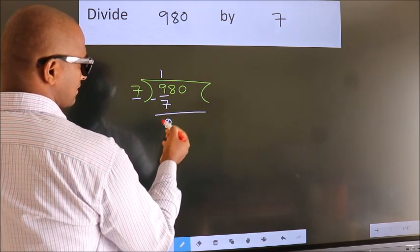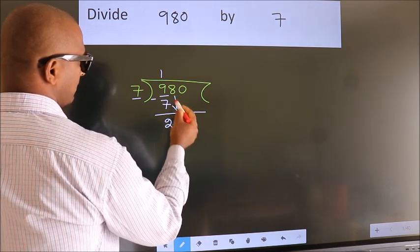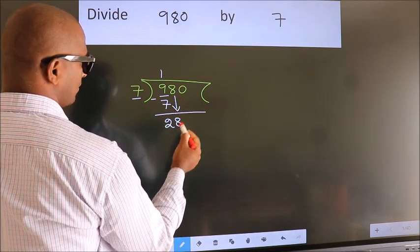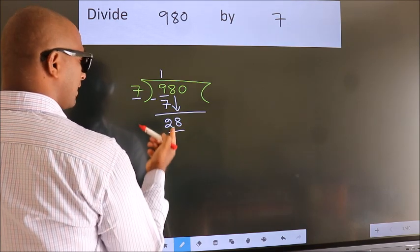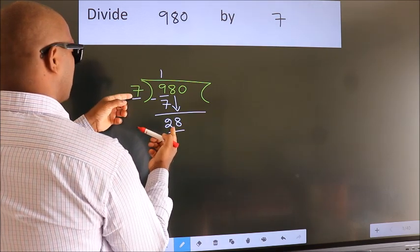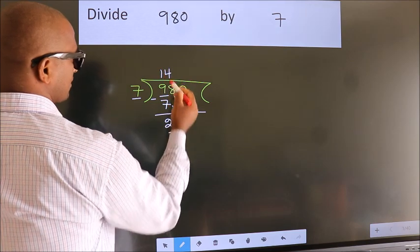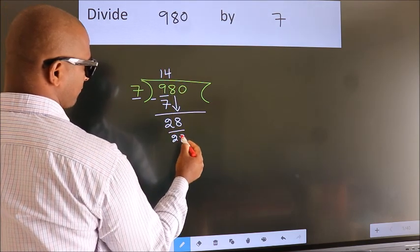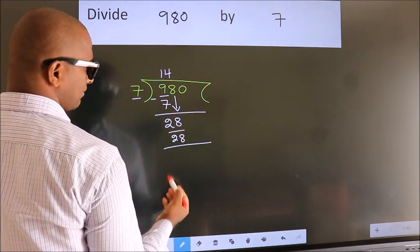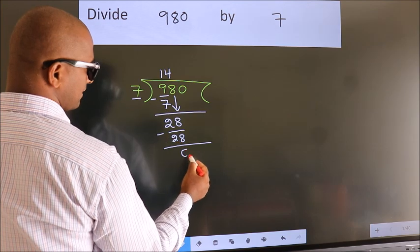After this, bring down the beside number. So 8 down. So 28. When do we get 28 in the 7 table? 7 times 4 equals 28. Now we subtract. We get 0.